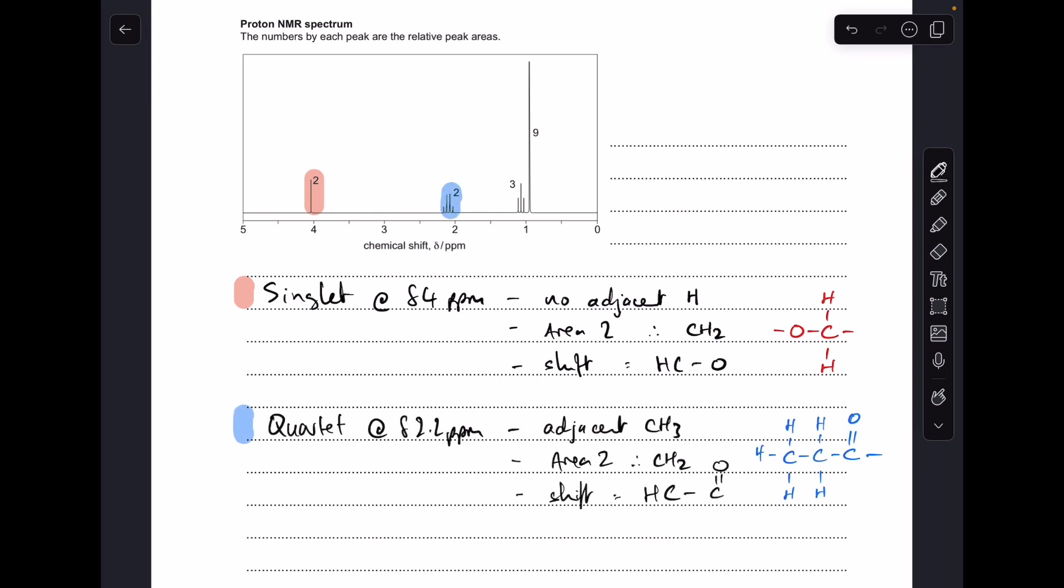Moving on to the quartet at roughly δ 2.2 ppm. Quartet means there's an adjacent CH3 group. Area 2 means CH2 is causing the signal, and that shift value is indicative of H-C-C=O, which is another bond you would expect to see in an ester.